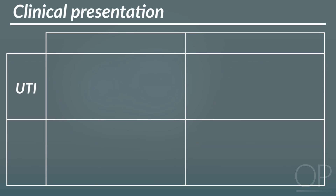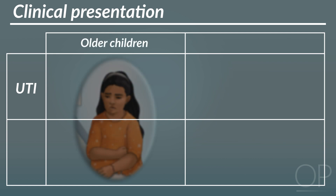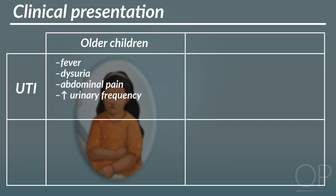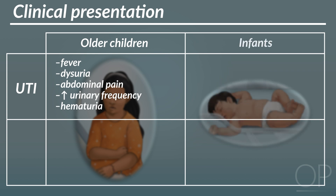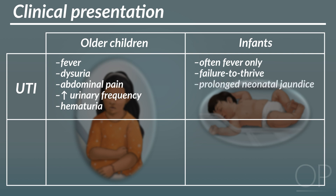The symptoms of urinary tract infection in older children are similar to adults. In addition to fever, the child may complain of dysuria, abdominal pain, increased urinary frequency, or hematuria. Infants often present with fever only, and it is difficult to distinguish UTI from other causes of fever in these young patients. Less common presentations of UTI in young infants include failure to thrive or prolonged neonatal jaundice.